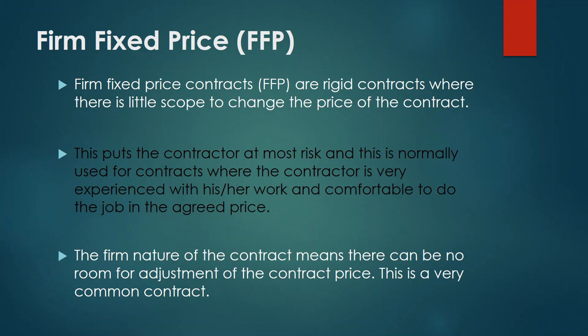Firm fixed price contracts are very rigid contracts where there is very little scope to change the price. The term 'firm' indicates how rigid it is. It puts the contractor at a high level of risk, and contractors normally agree to such contracts because they are very familiar with the job. For example, someone asked to build a fence would be very comfortable quoting a price. The firm nature means there is no room for adjustment of the contract price.